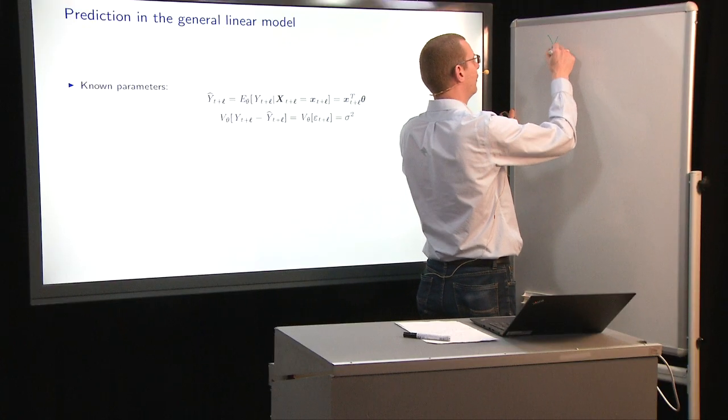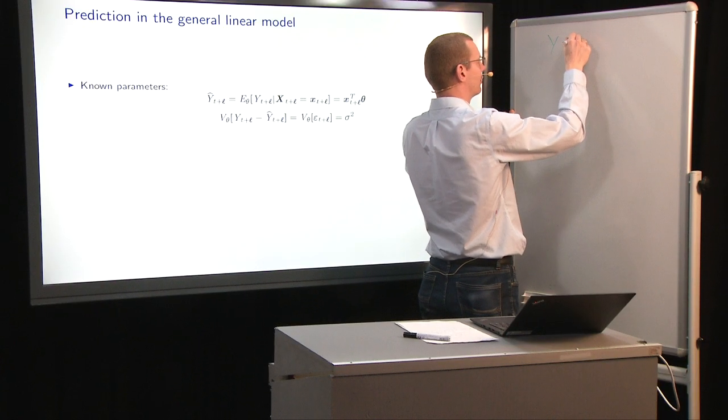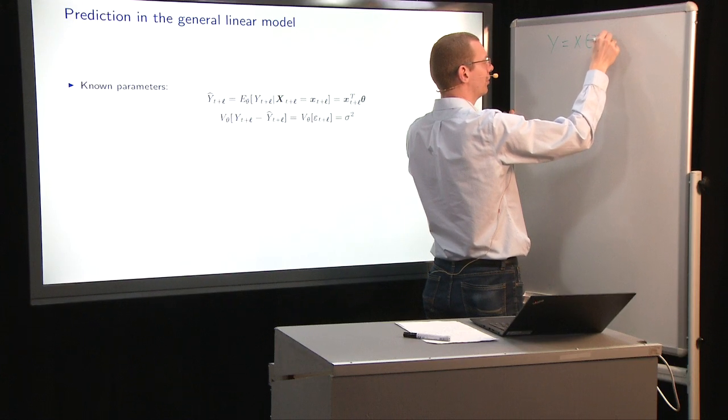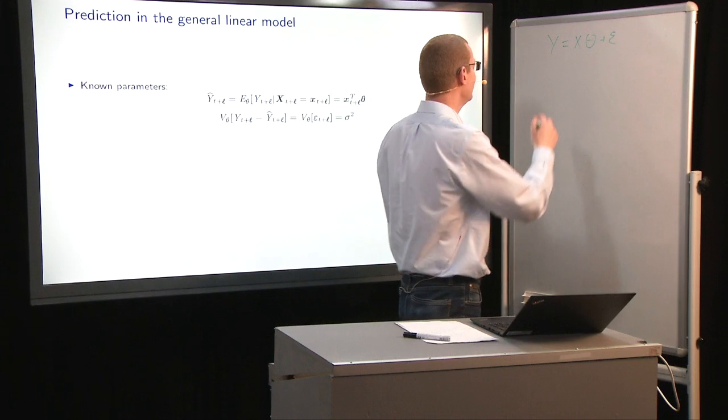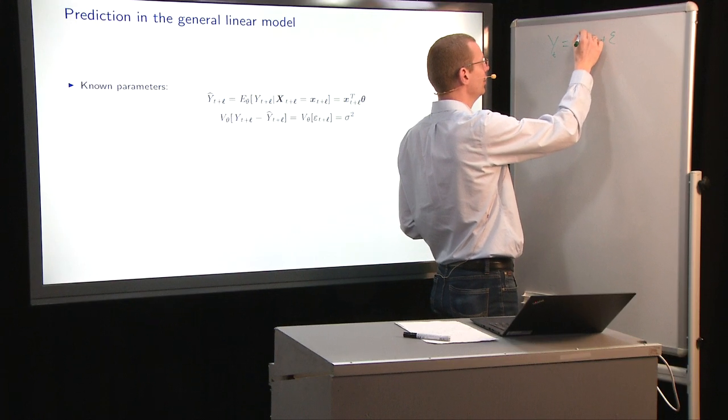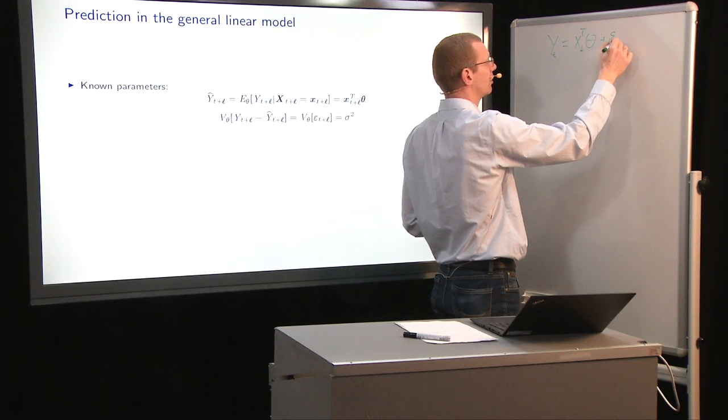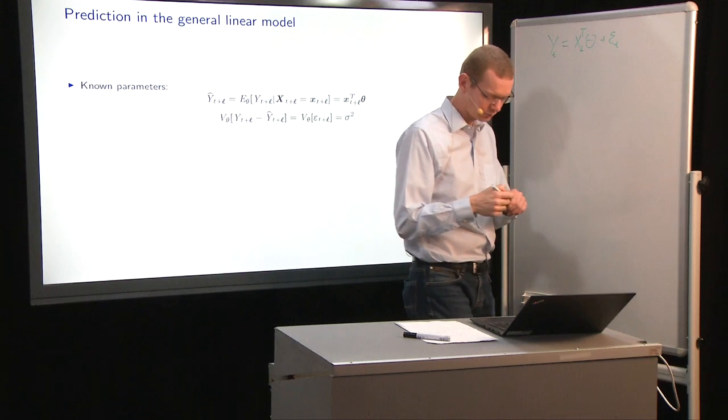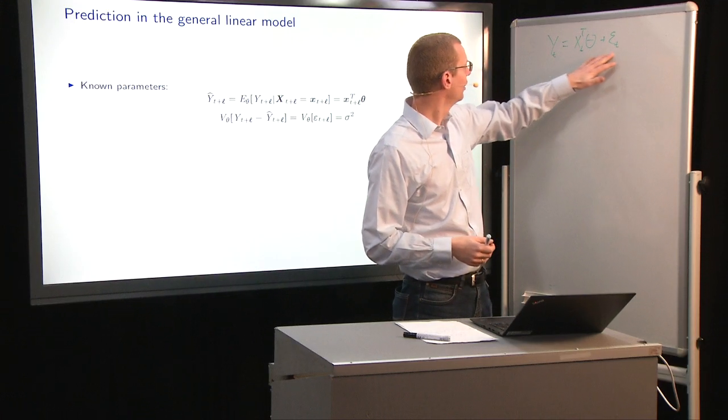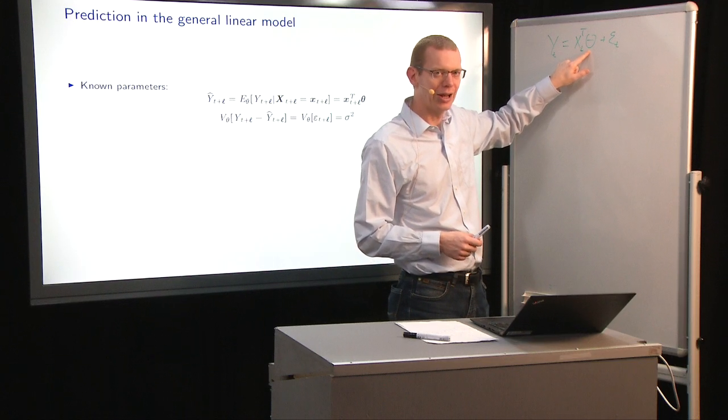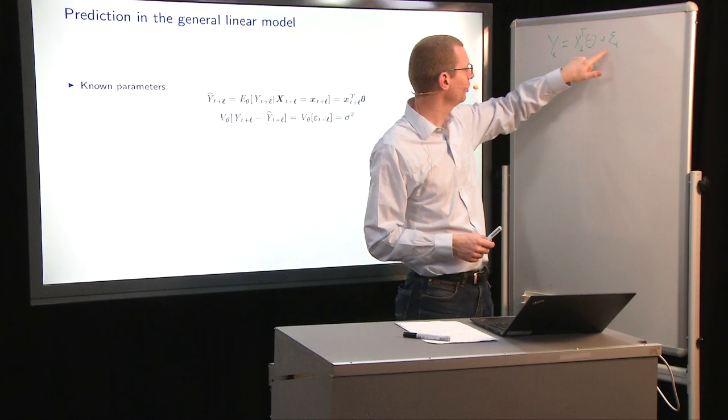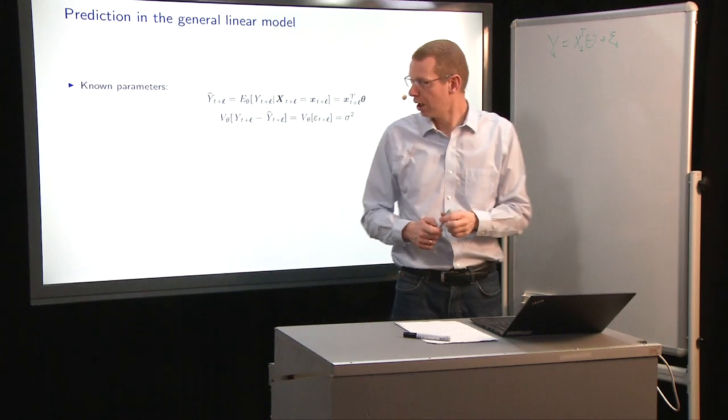Because we have the observations, and that's X and theta plus epsilon. So in this case, it's fairly easy. Let's put some indices on here. So in this case, it's easy to predict if we know theta, and if we know the predictors here, the only uncertainty comes from the epsilon.